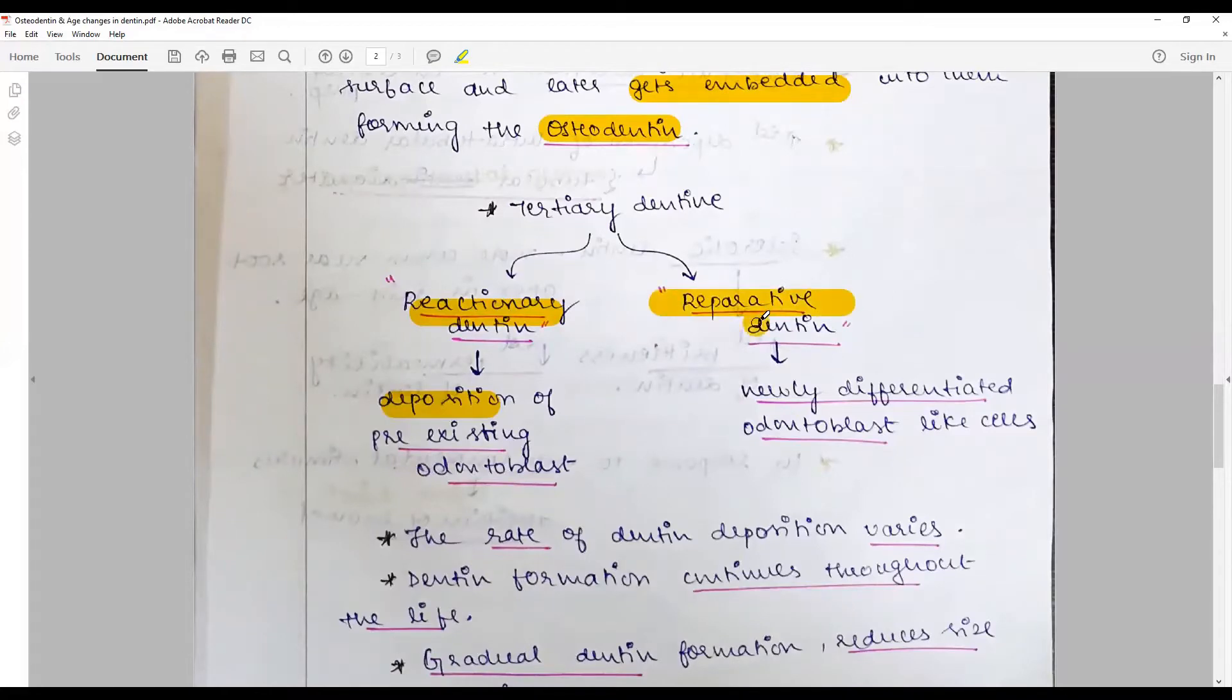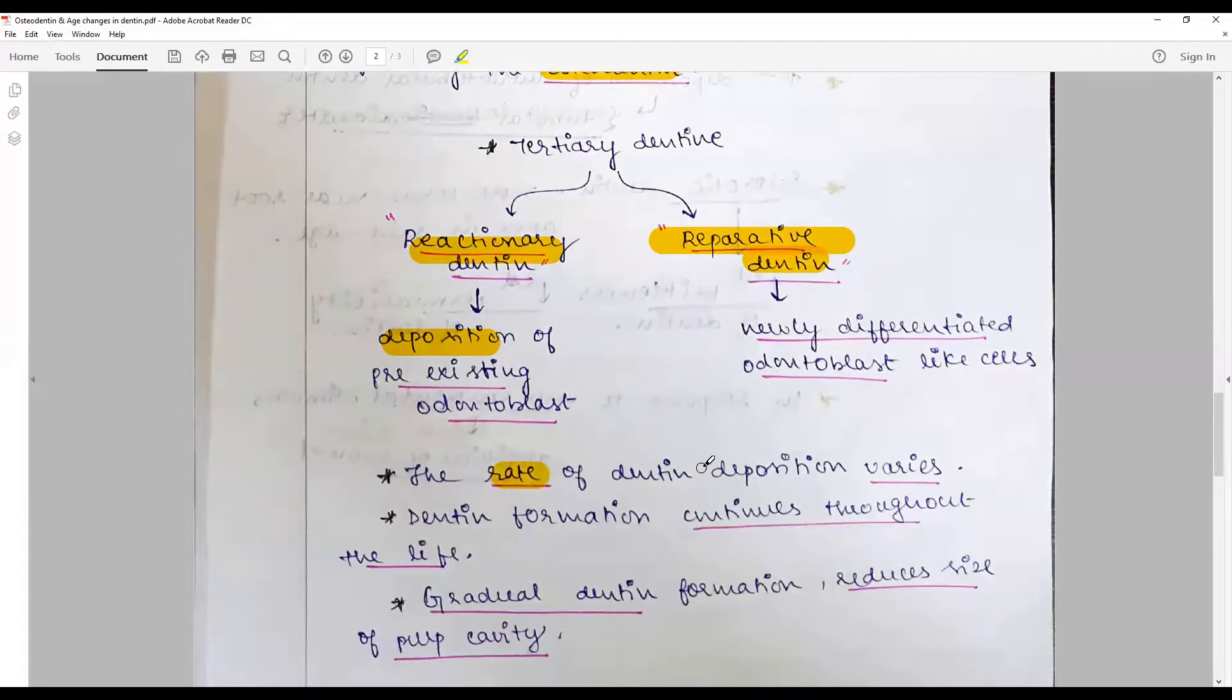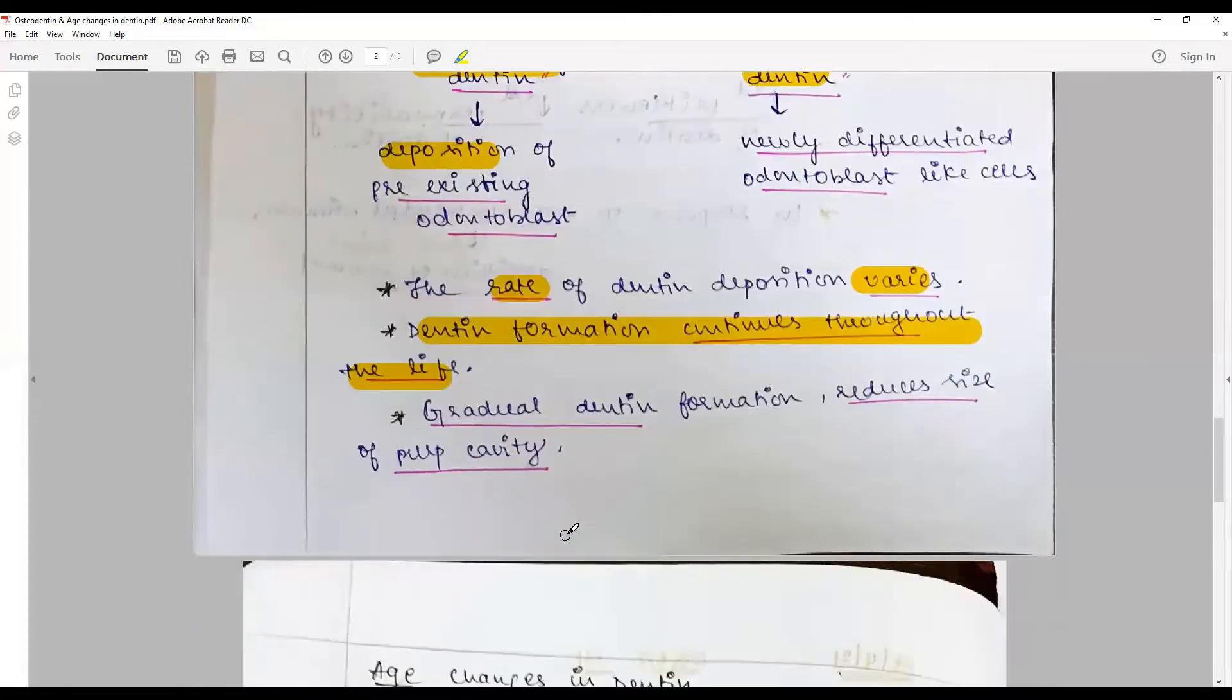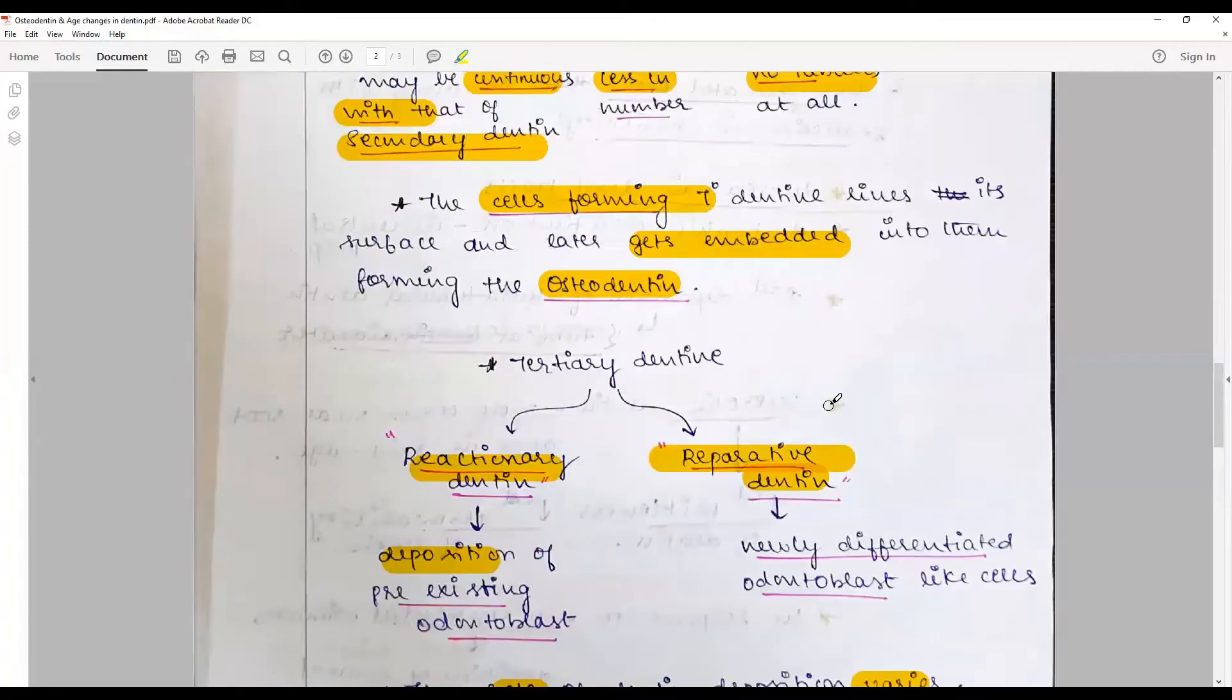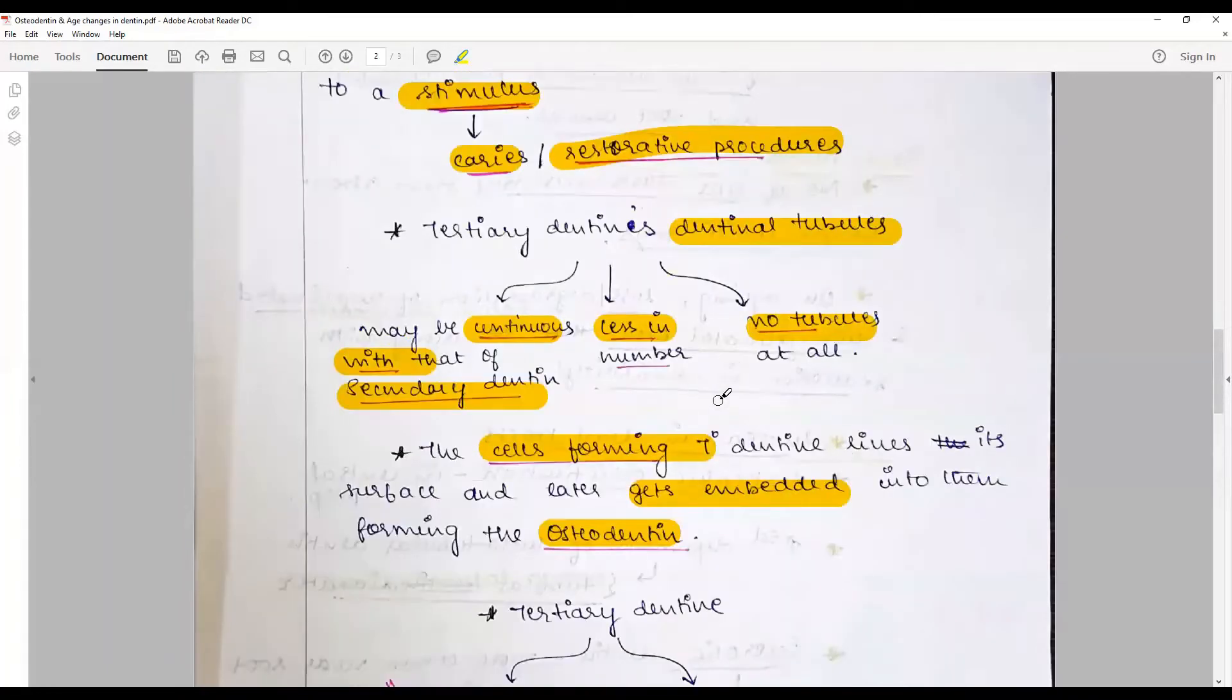The rate of tertiary dentine varies. Dentine formation is persistent throughout life, though the rate will vary. When the newly formed dentine is embedded inside the pulp, that is called osteodentine.